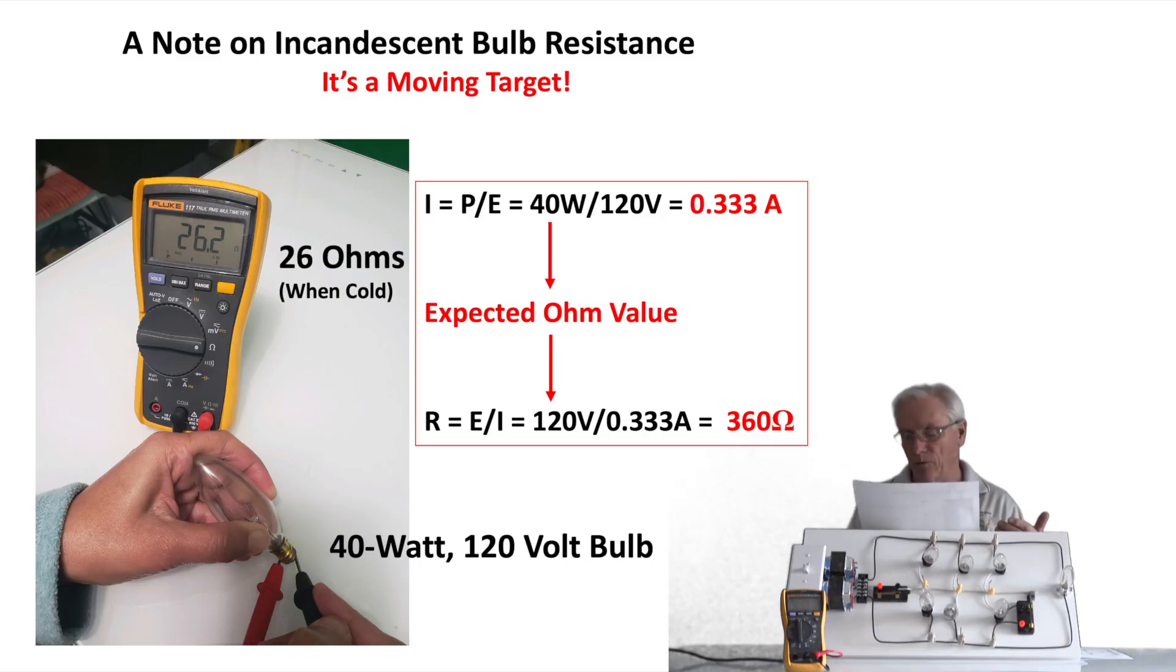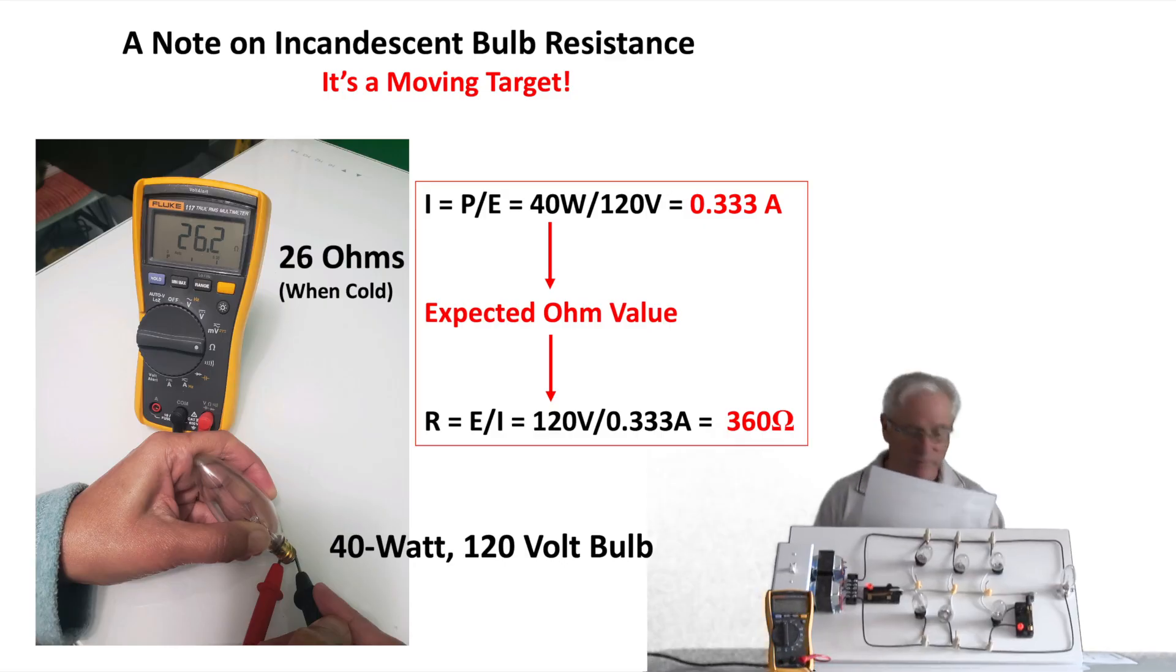You start off at 26 ohms when the lamp is cold, but as the lamp internally heats up, the resistance goes up to where it's expected and reduces the current flow. So you don't get accurate measurements on your ohms until you come up to full heat. The basics of what we're going to talk about still apply and it works perfectly well.